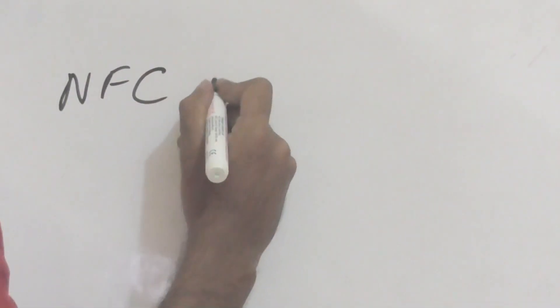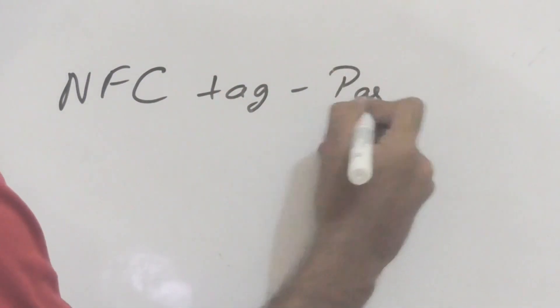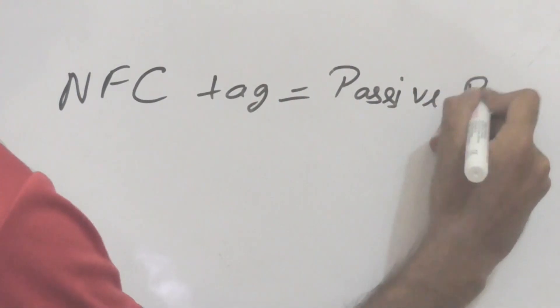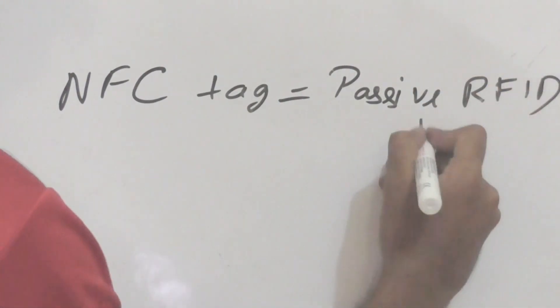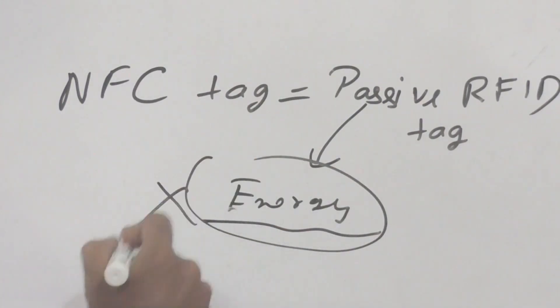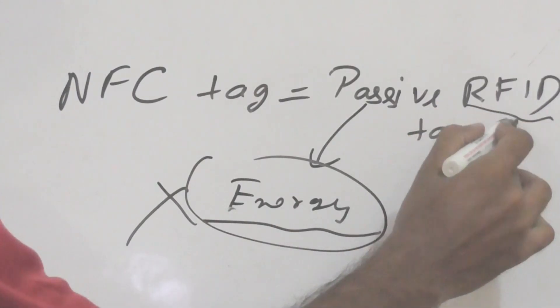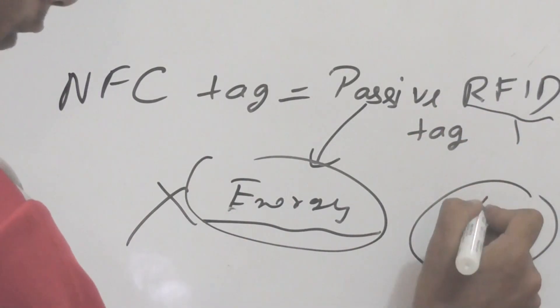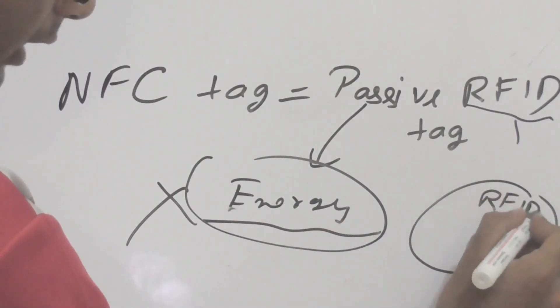And this is why NFC tags are also called passive RFID tags. It's called passive because, as you have seen in the previous example, NFC tags don't have a power supply of their own, but they derive energy from the nearby object. And RFID tags, because NFC tags are a subcategory of RFID tags. So if these are the RFID tags, a subset will be NFC tags.